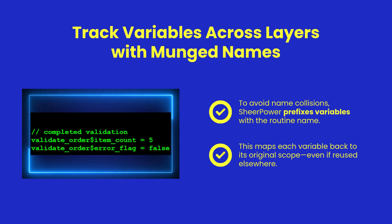ShearPower uses a smart system called name munging to link each variable to its source routine. This avoids name clashes and builds a timeline of state changes across your program, even when different routines reuse the same variable names.